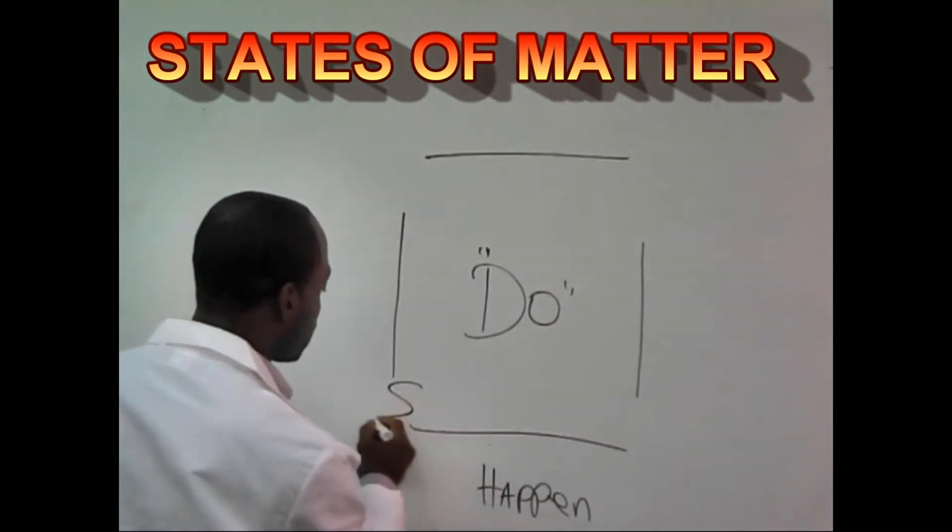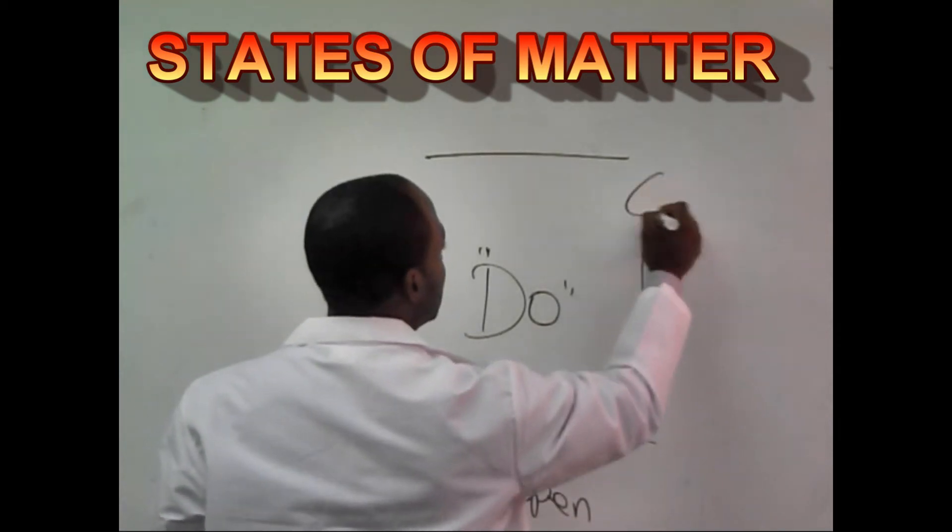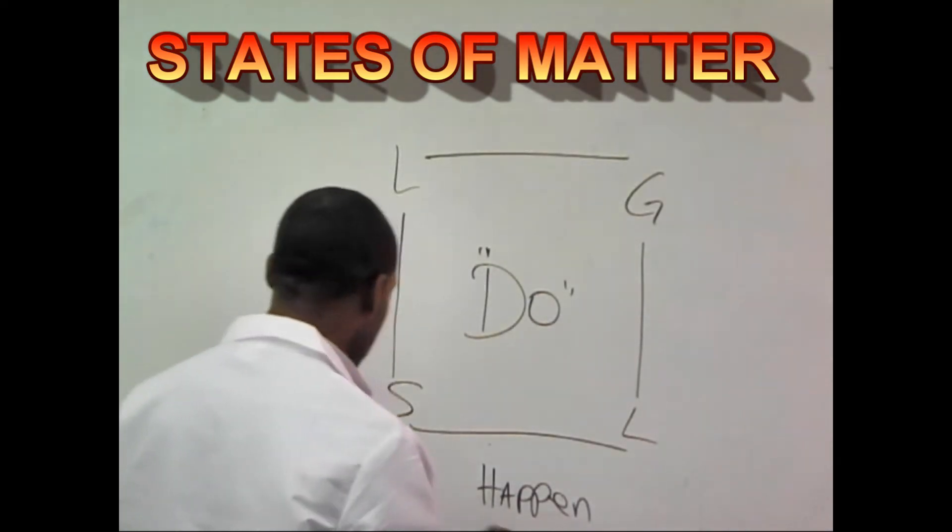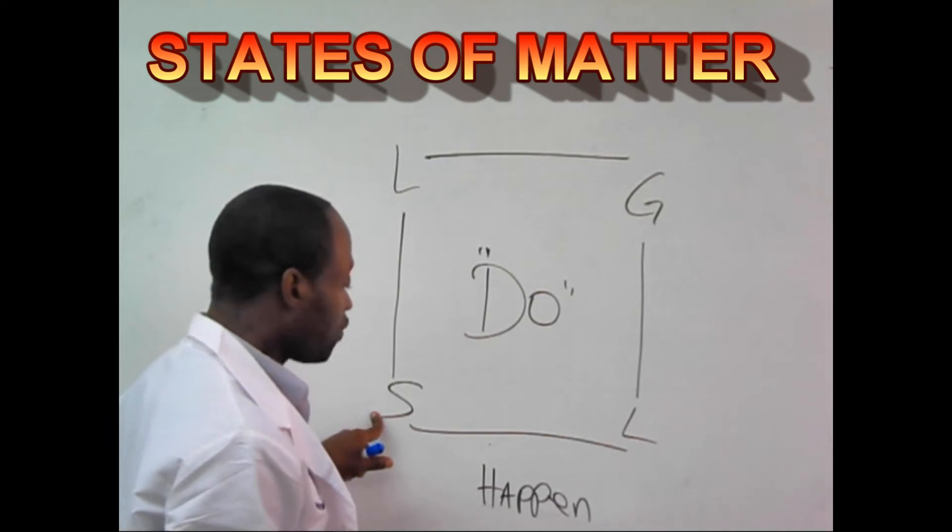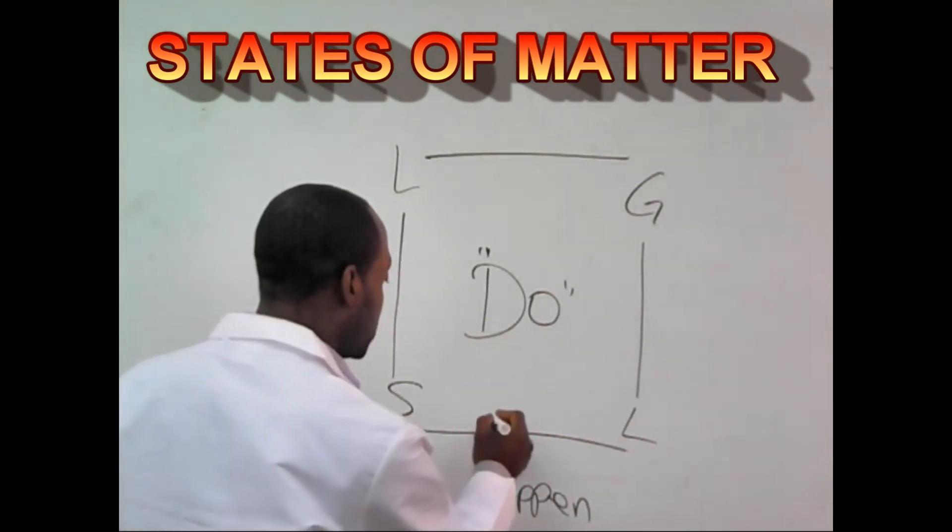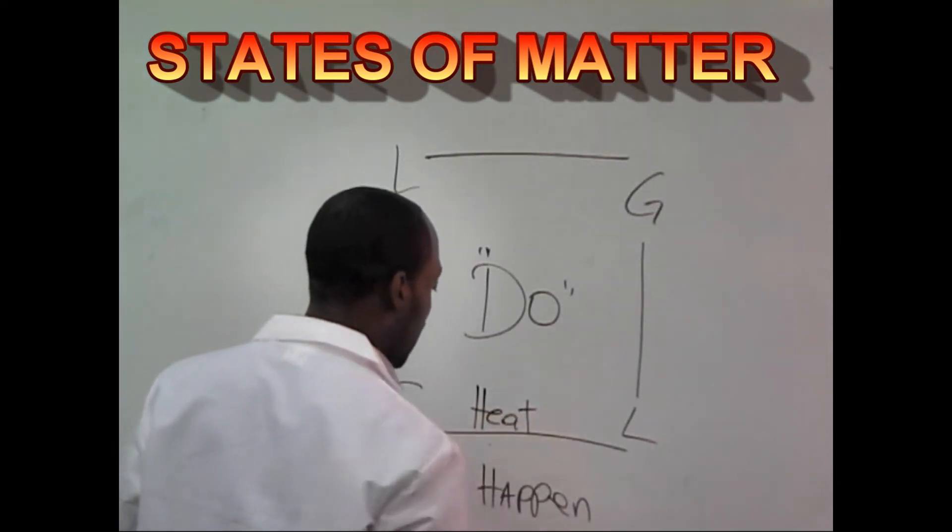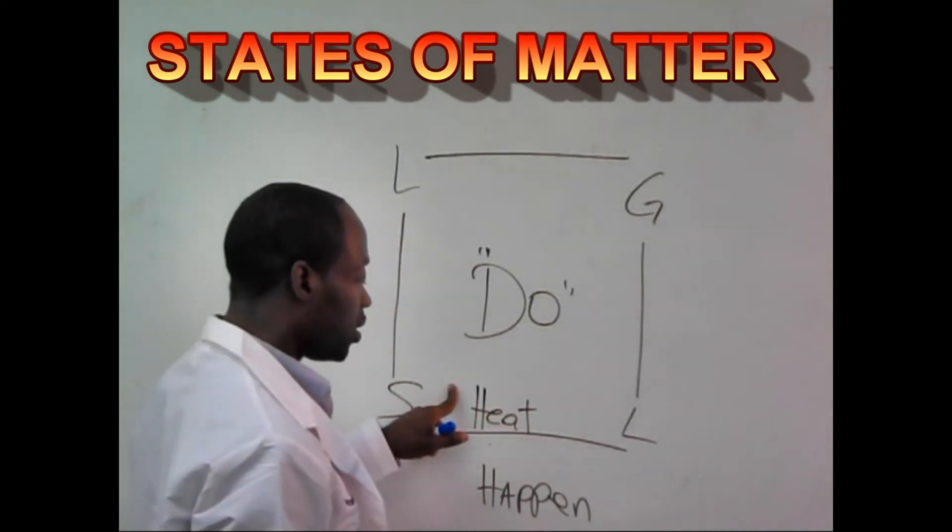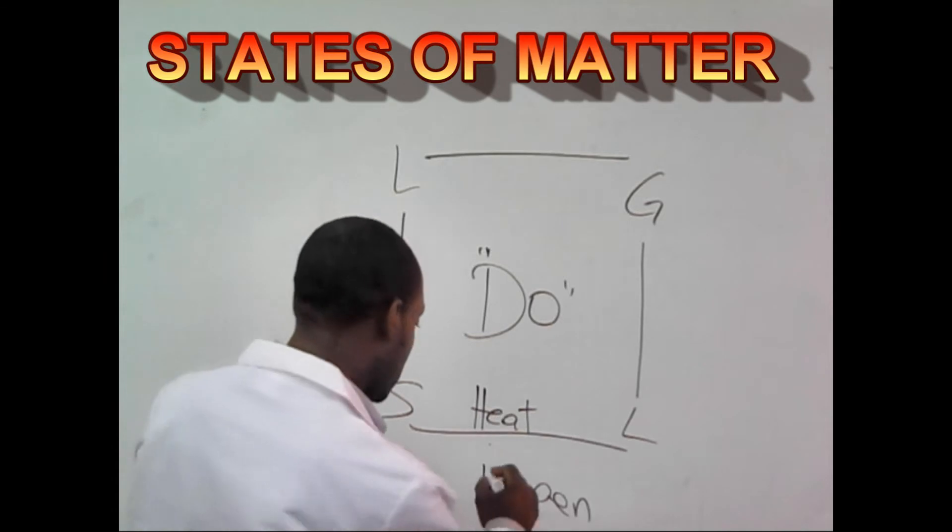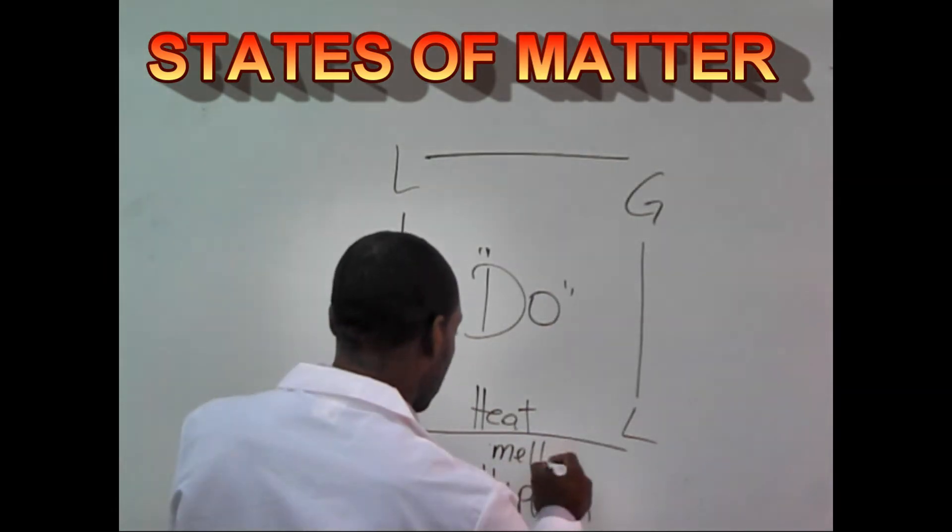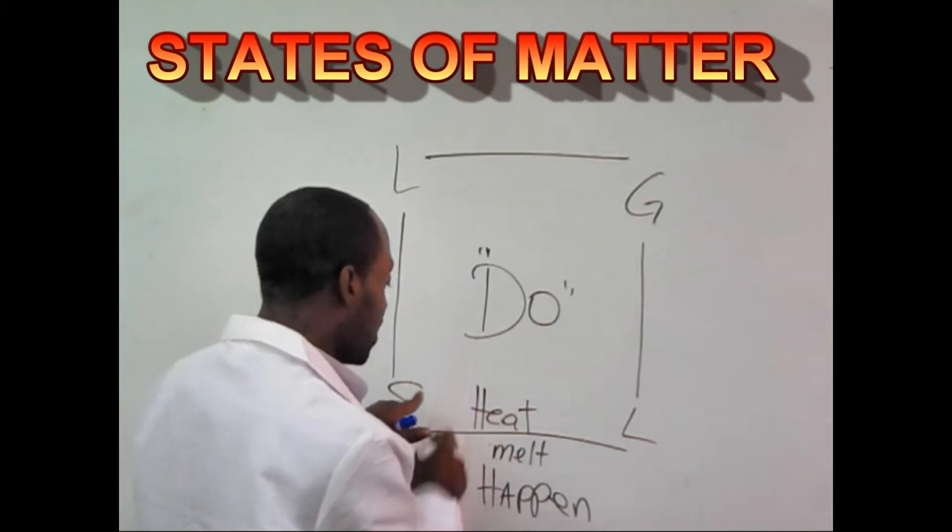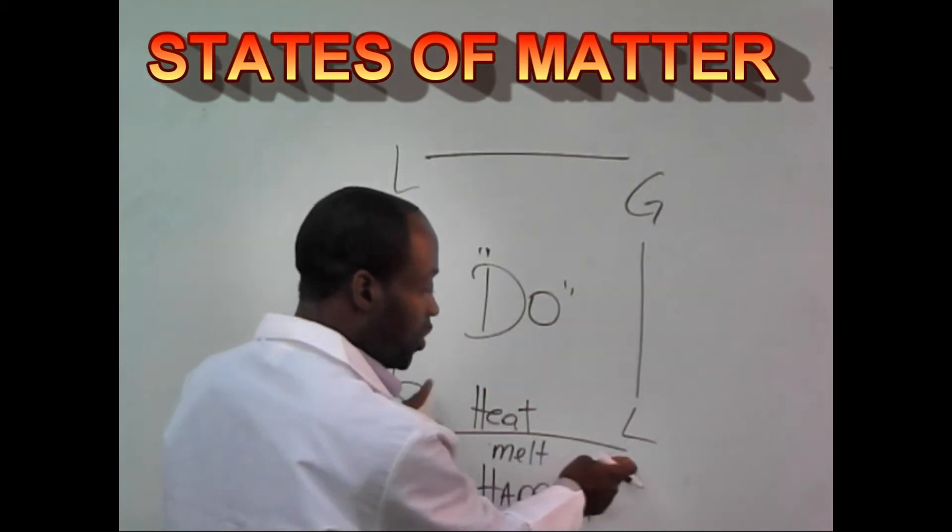So let's go ahead and put S right here, L right here, G right here, and L right here. So my question to you is this, I have a solid right now. What do I have to do to turn it into a liquid? I must heat it. So when I heat it, what happens to the ice? When I heat ice, melt happens. So I want to put melt here. Remember, do goes in here, happens on the outside. When I heat ice, melt happens, gives me liquid.